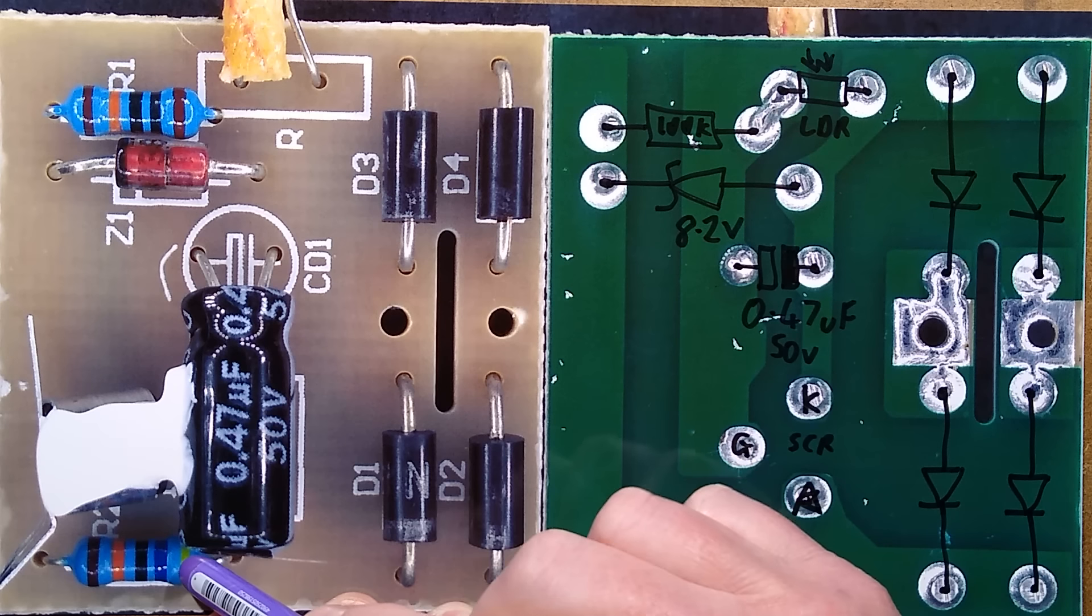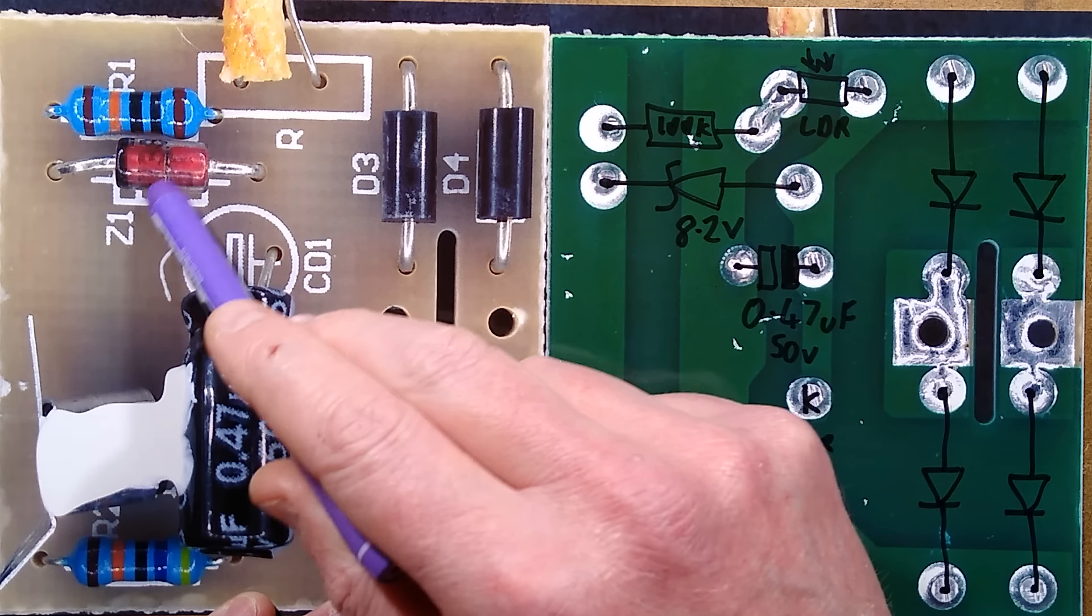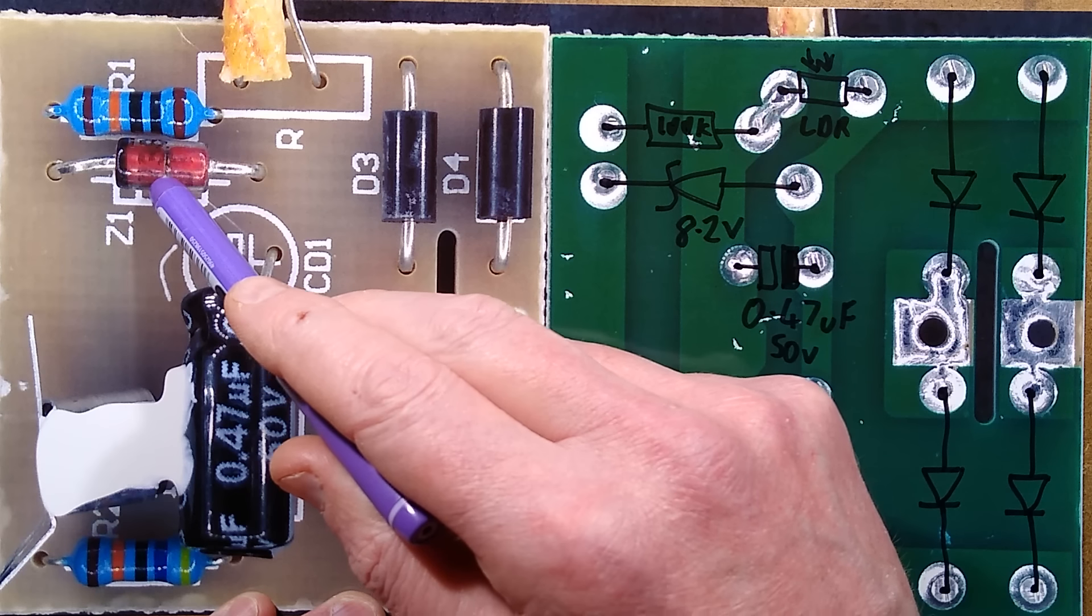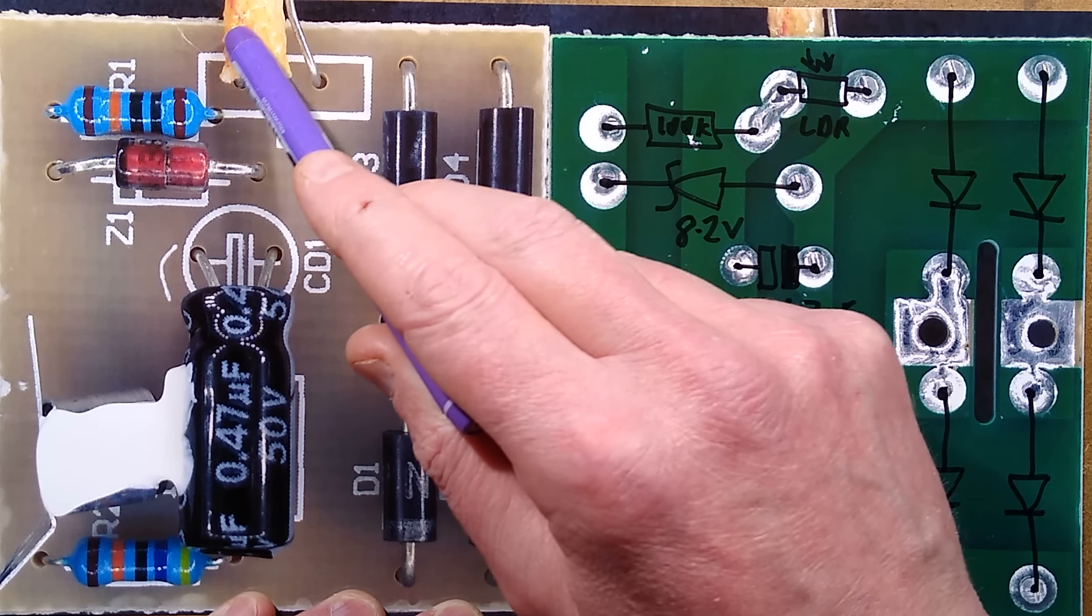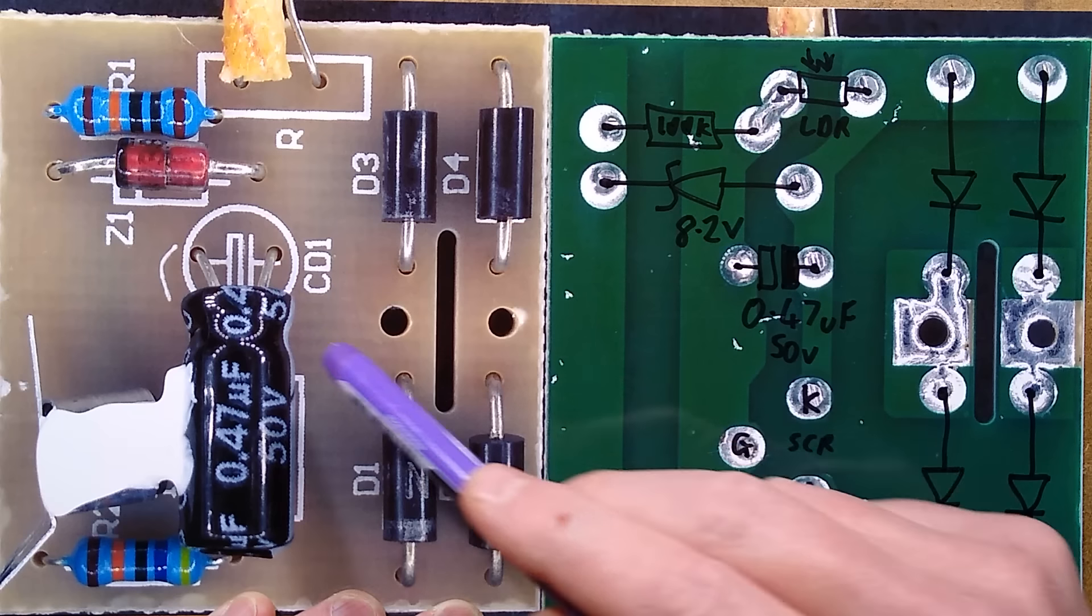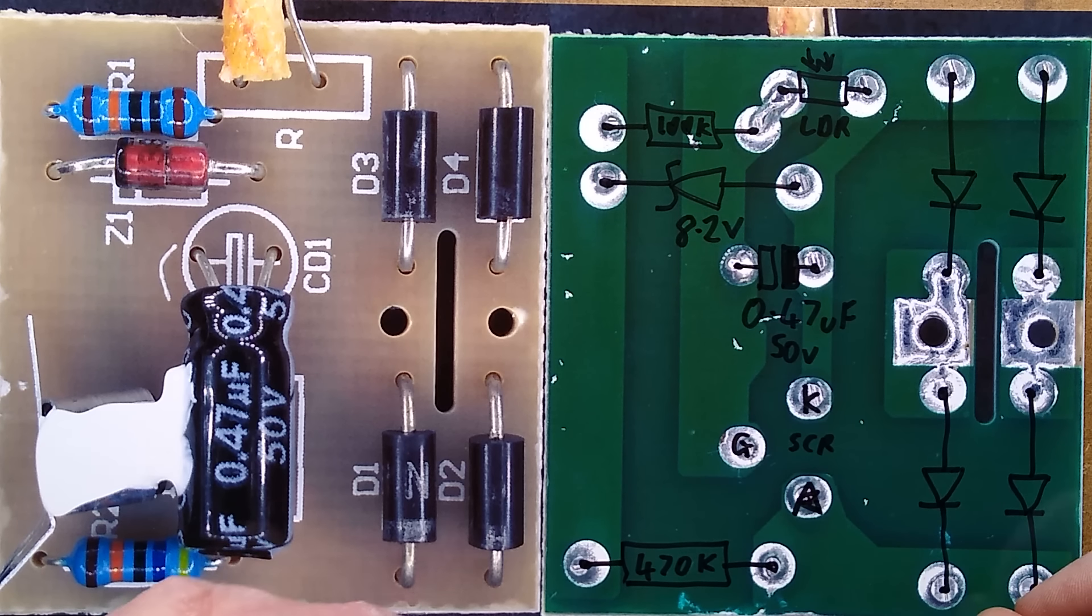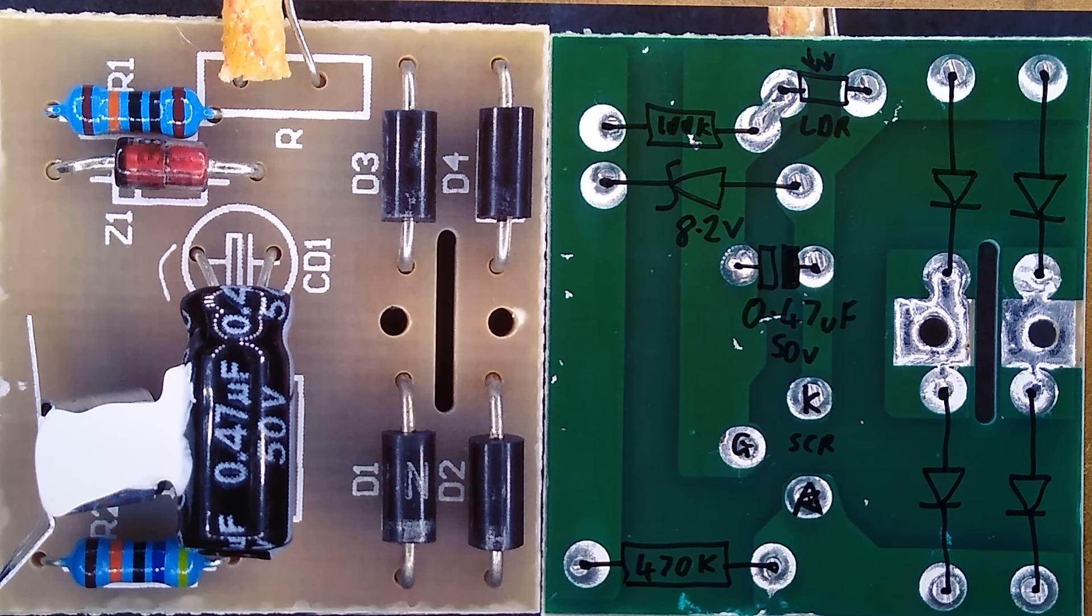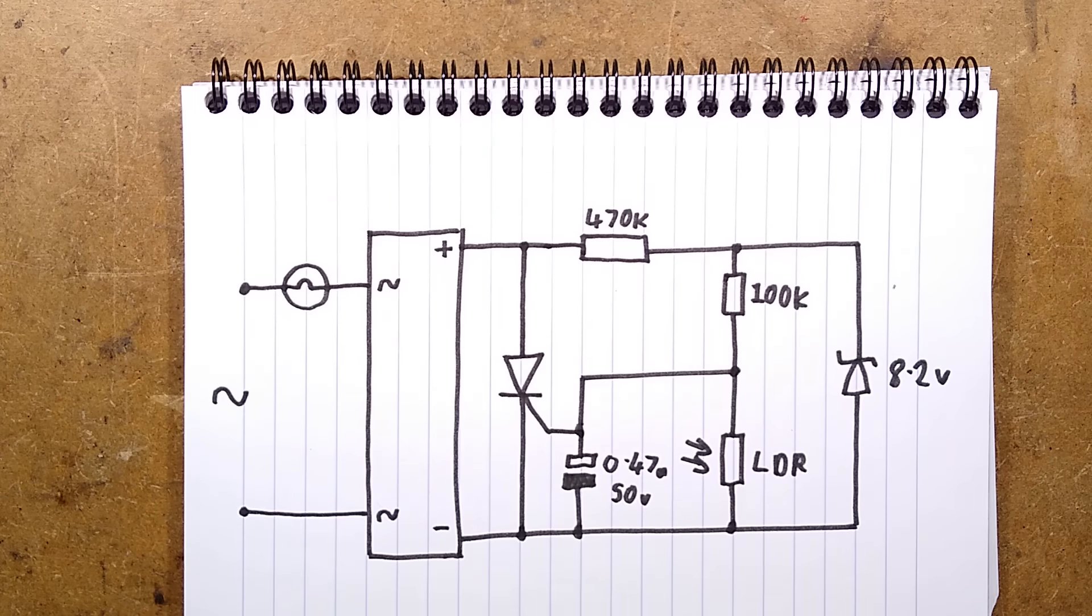There is a current limiting resistor here, 470K. There's a voltage clamping zener diode here. I measured just over 8 volts, so 8.2 volts is standard value. 100K in series with the LDR, light-dependent resistor. And that is it. I shall let you feast your eyes upon the schematic here, well, the circuit board. And I shall bring in the schematic, and we can explore its simplicity and why it's so unstable.